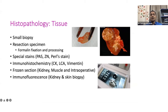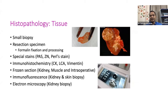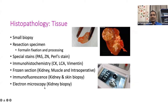Electron microscopy is an advanced technique available in limited setups, with maximum utility in kidney biopsies, though it has applications in other pathological and microbiological investigations as well. To summarize histopathology subspecialties and tools: special stains, immunohistochemistry, frozen sections, immunofluorescence, and electron microscopy.